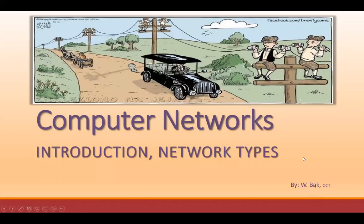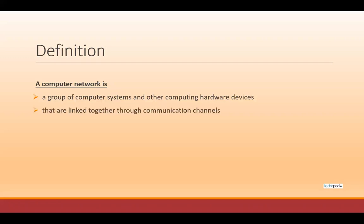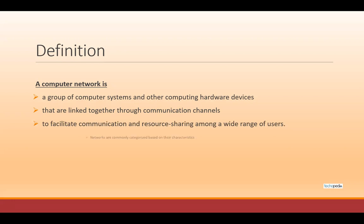Computer networks. A computer network is a group of computer systems and other computing hardware devices that are linked together through communication channels to facilitate communication and resource sharing among a wide range of users. Networks are commonly categorized based on their characteristics.